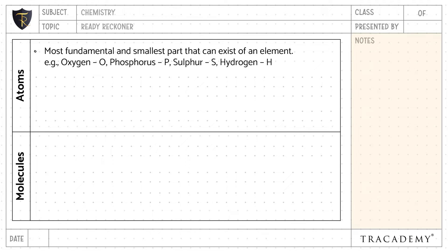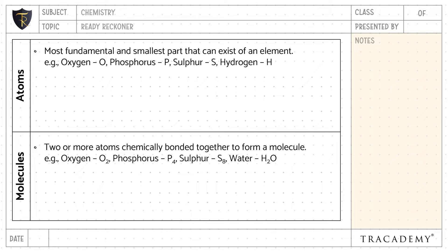When two or more atoms chemically bond together, it forms a molecule. Examples include oxygen molecule, phosphorus, sulfur, and water molecule.